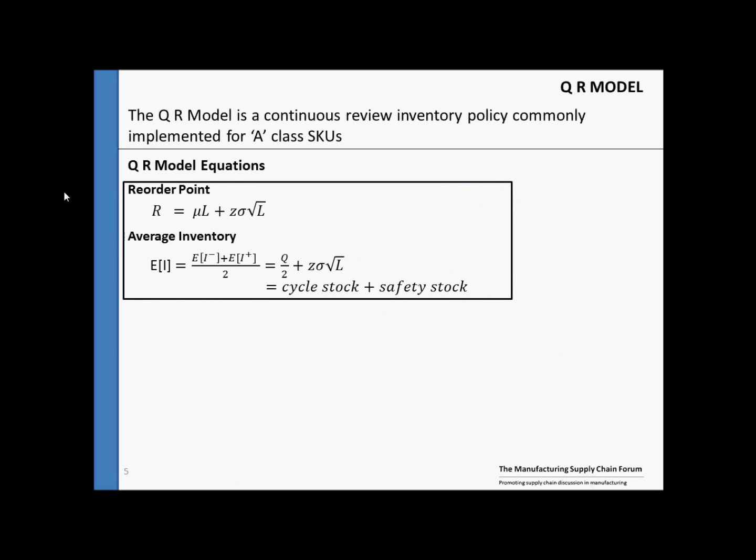Our equations for a Q-R model are given here. First, we have our reorder point R, which is equal to mu times L—mu being the mean demand times our lead time L—plus the safety stock given as Z sigma square root of L.